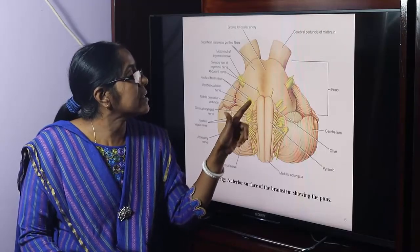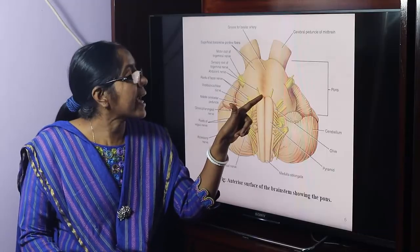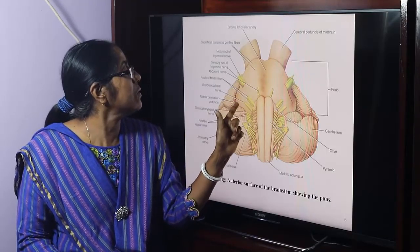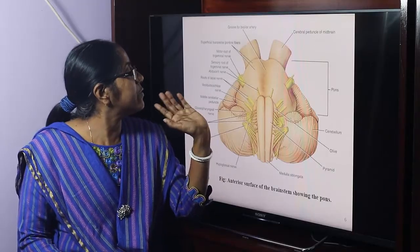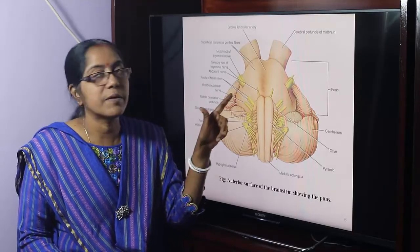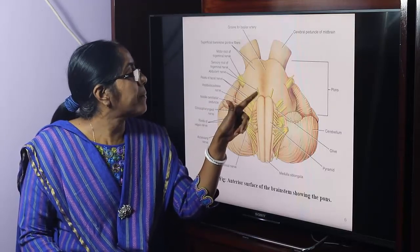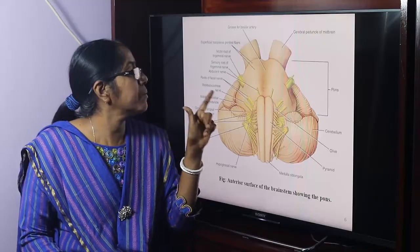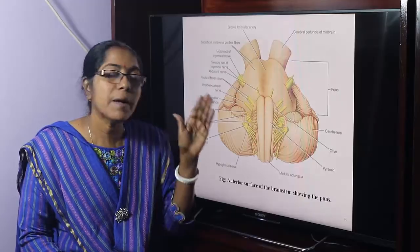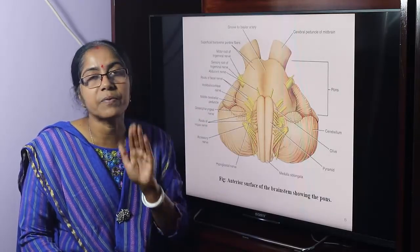At the junction with the medulla — the pontomedullary junction — we find several nerves. The abducens nerve is purely motor. The facial nerve is a mixed nerve. And the vestibulocochlear nerve is a purely sensory nerve.